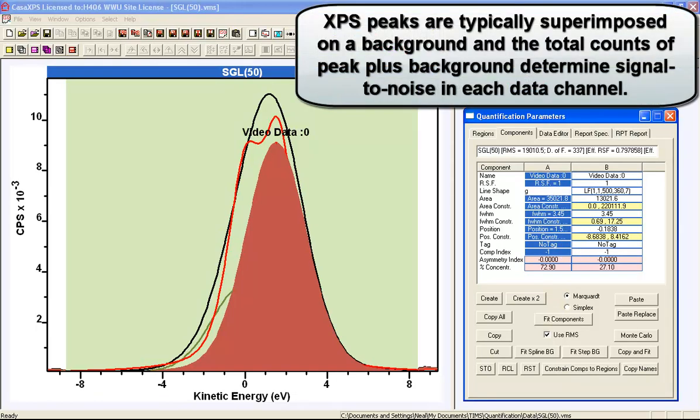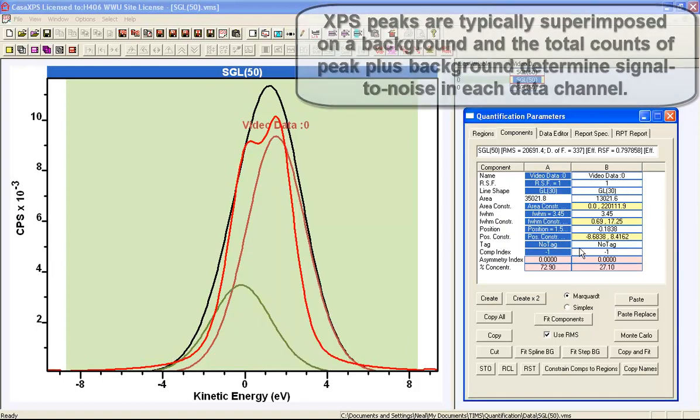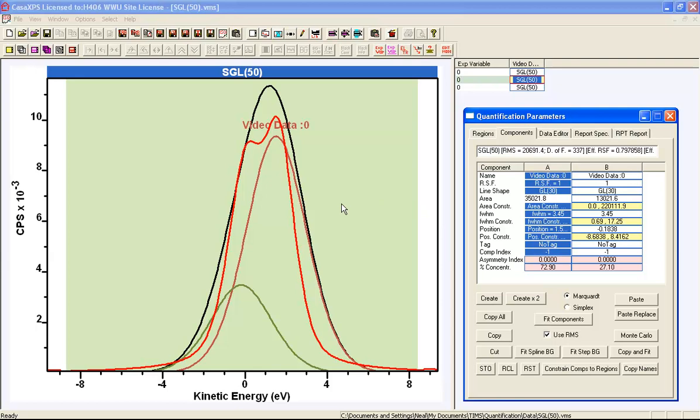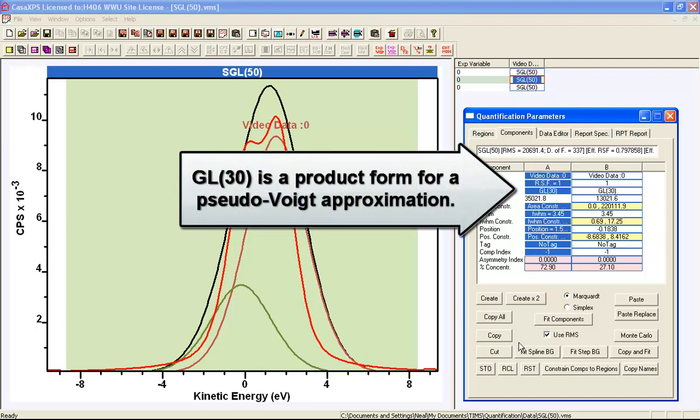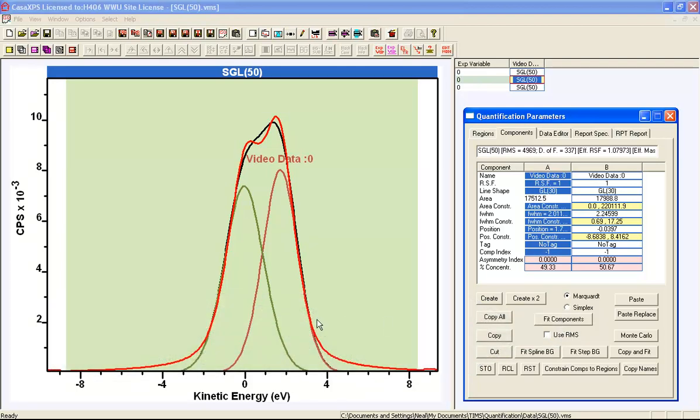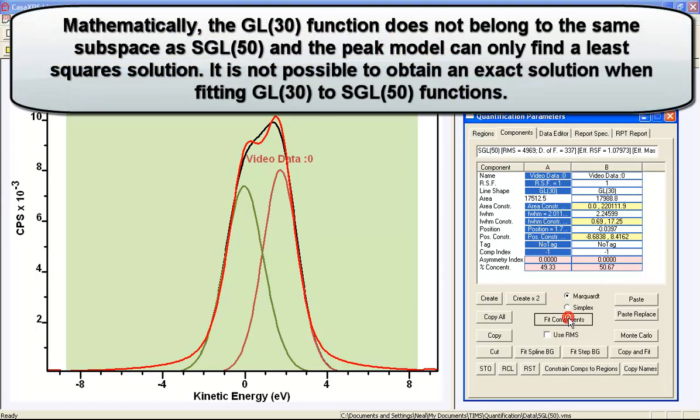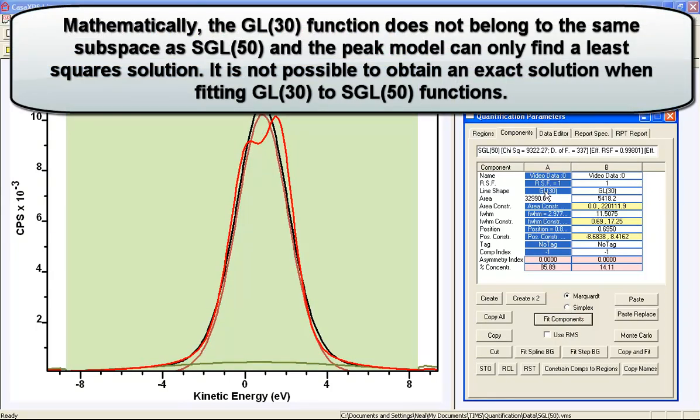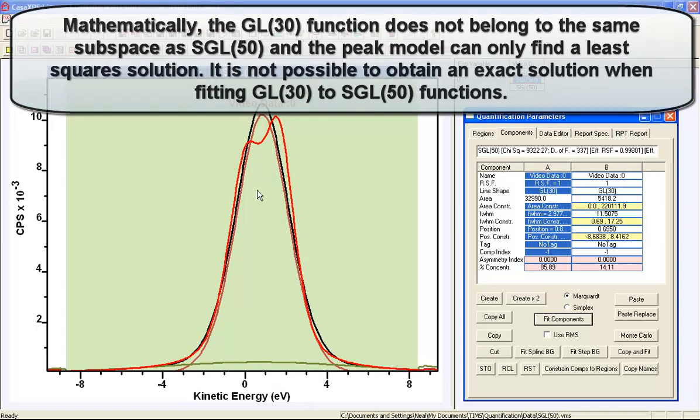If we select a GL30 and apply that to both of these component peaks, we then have a peak model consisting of two peaks which we'd like to fit to a data envelope that we know is constructed from two peaks. If I use the root mean square and say fit, I get a reasonable fit to the data. But if I use the chi-square for this particular set of data and press fit with these GL30 line shapes, I get something that looks really quite wrong.